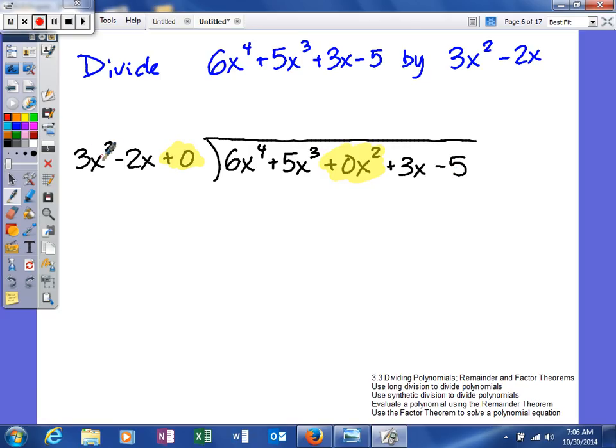3x squared - what I have to multiply 3x squared by to give me 6x to the 4th. And that answer is going to be 2x squared. Notice I'm lining up my terms. I'm going to take this and multiply it by all three of those: 6x to the 4th minus 4x to the 3rd plus 0x squared. I'm going to subtract, so these signs will change. Notice I change all of them.